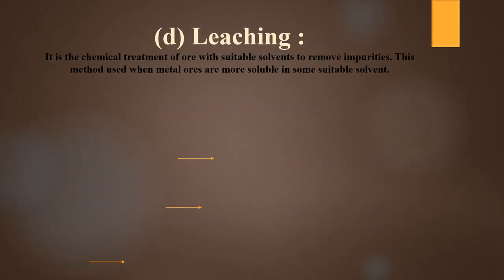Leaching is the chemical treatment of ore with a suitable solvent to remove impurities. This method is used when metal ores are more soluble in a suitable solvent.